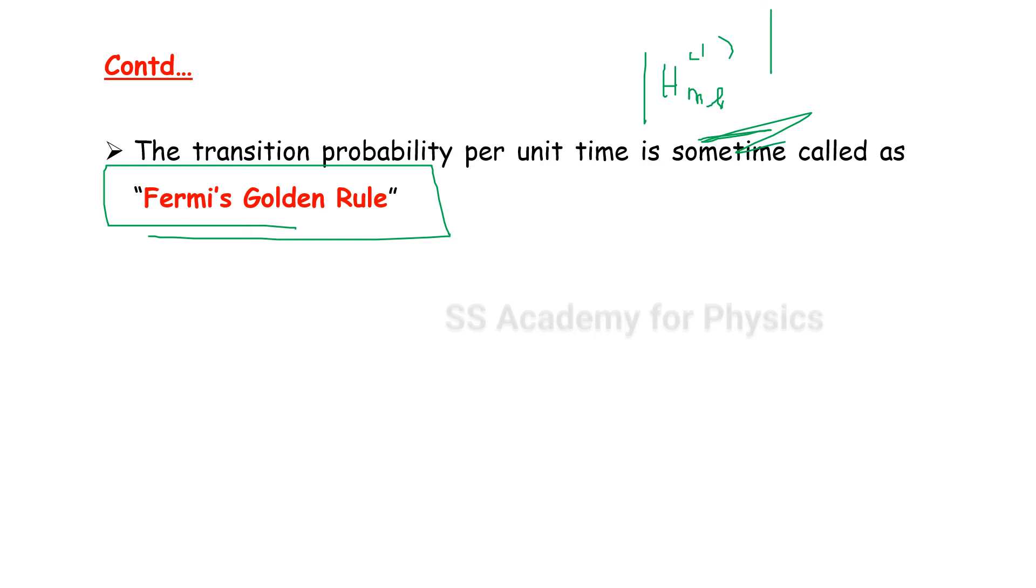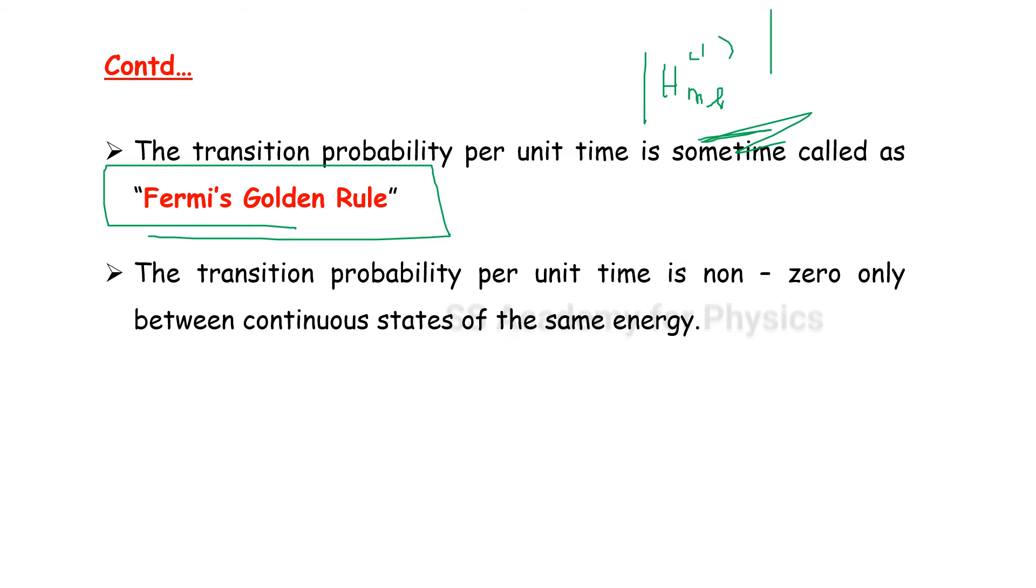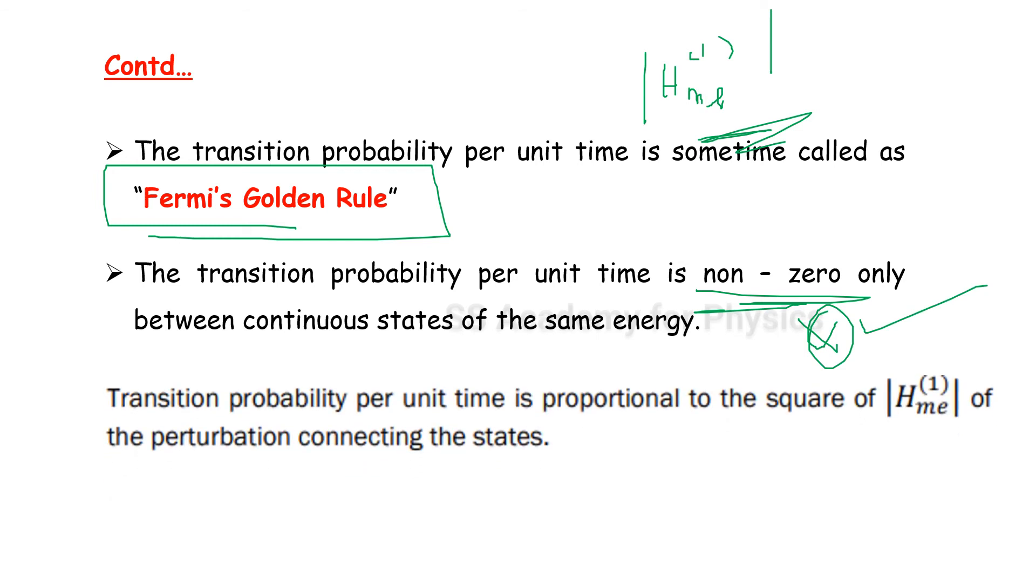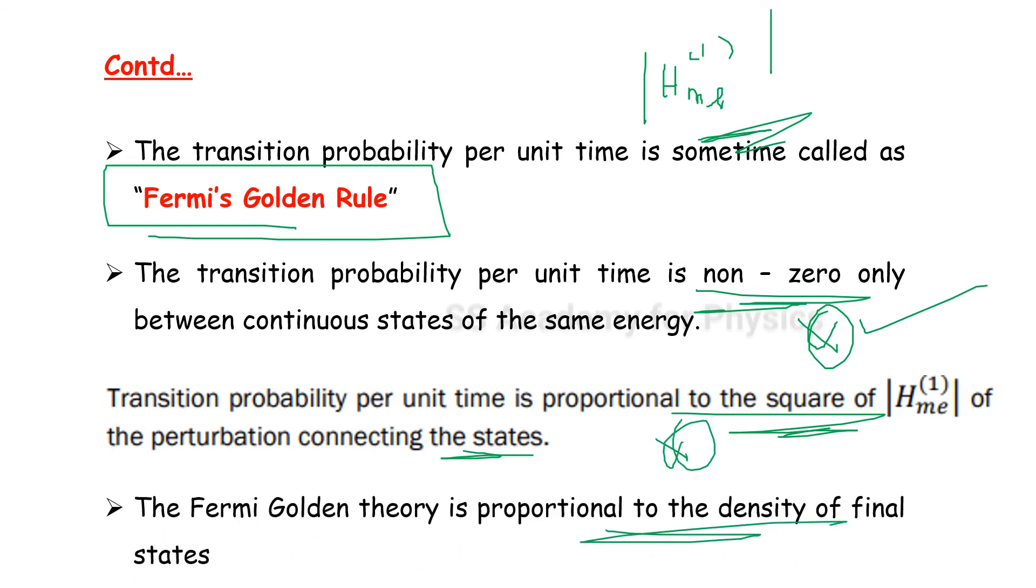The transition probability per unit time is non-zero only between continuous states of the same energy, is a very important statement. The transition probability per unit time is proportional to the square of the perturbation connecting the states. The Fermi golden theory is proportional to the density of final states. These three points are very very important.